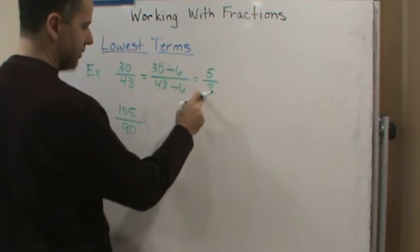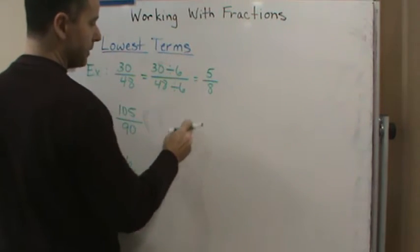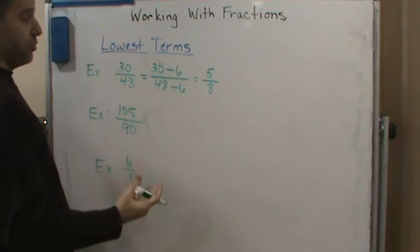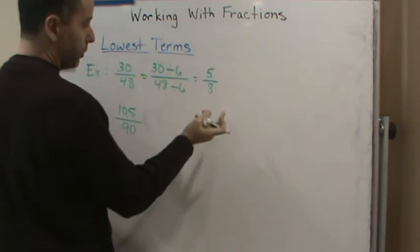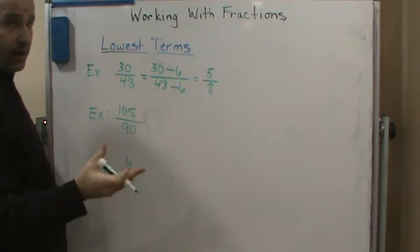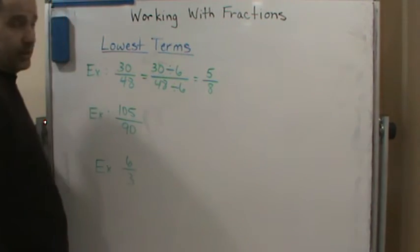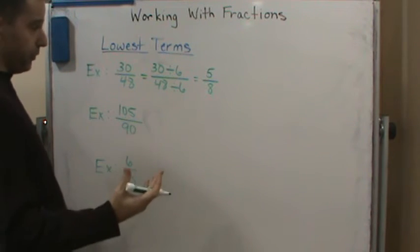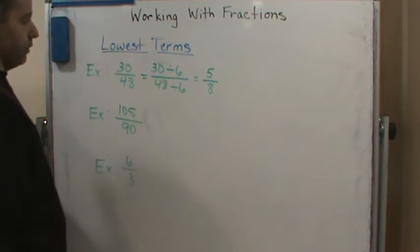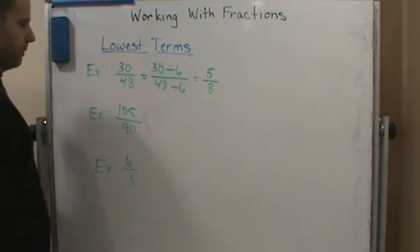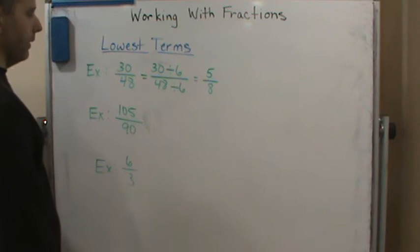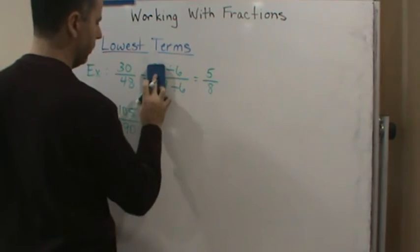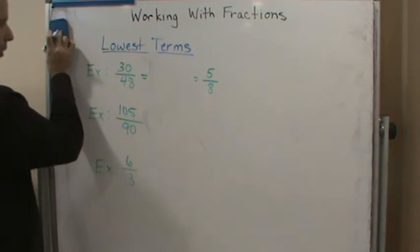Now I look at 5/8 and ask myself: is there anything larger than 1 that will divide both of those? The answer is no. 5 is a prime number, so the only numbers that divide 5 are 5 and 1, and 5 definitely does not divide 8. Since the largest number that divides both is 1, we're done — 5/8 is in lowest terms.